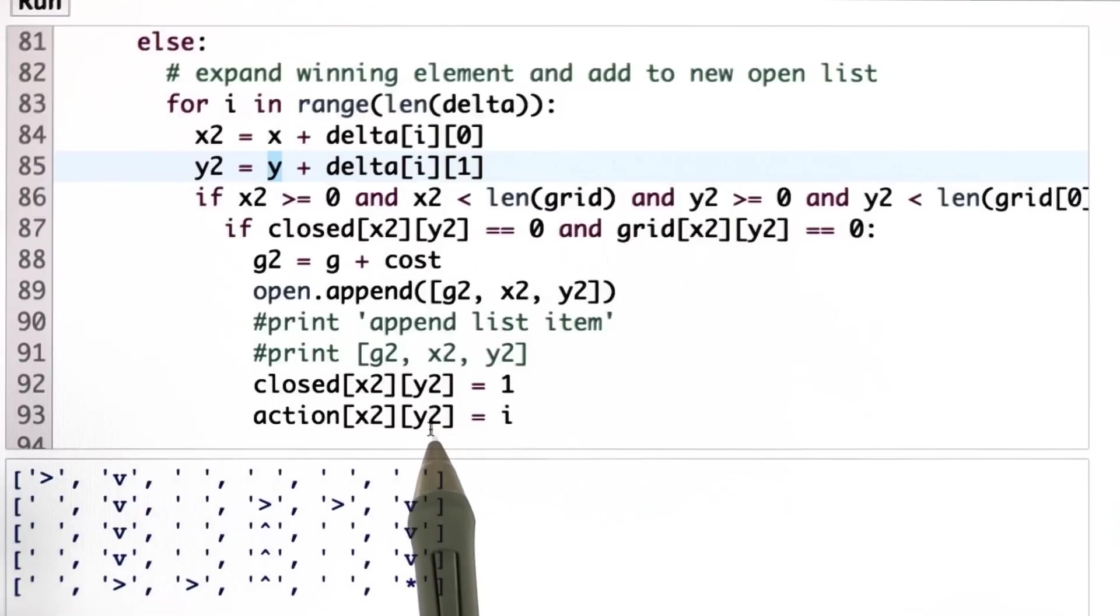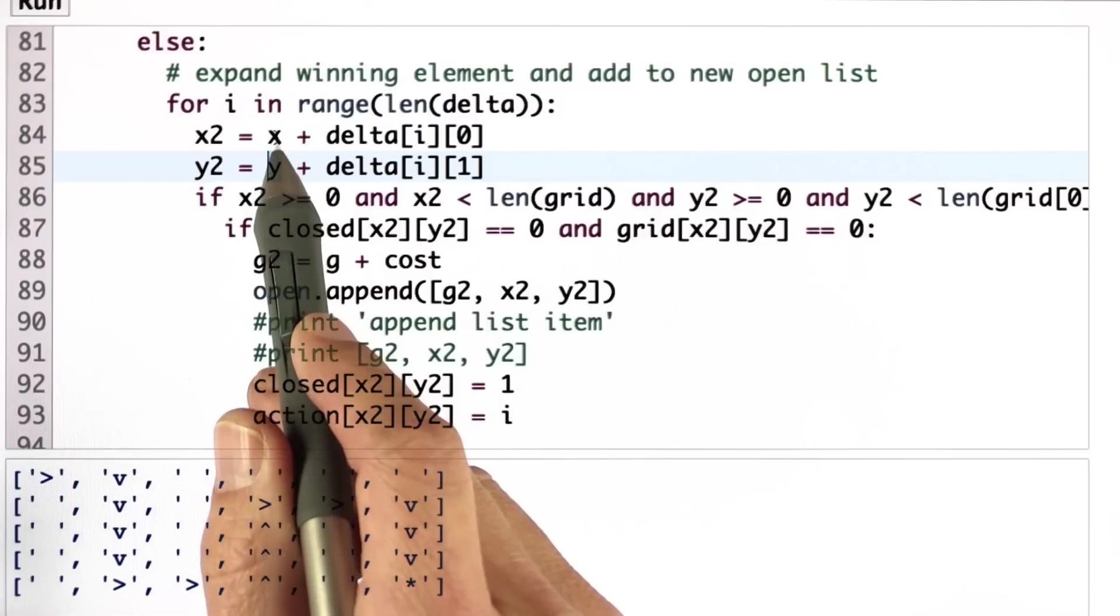But when I hit the to state and expand it for the first time, then this is going to be the expansion that's part of the optimal path. So I associate the action with the successor state, not with the originating state over here.